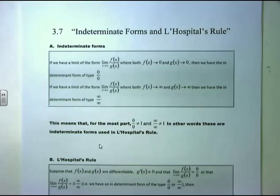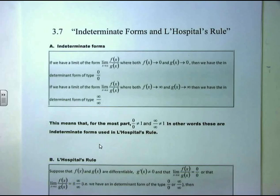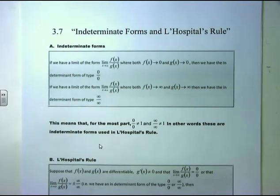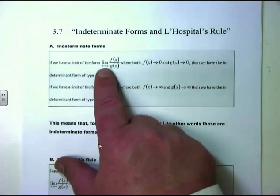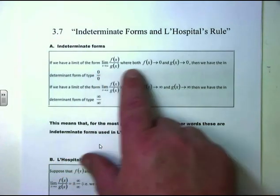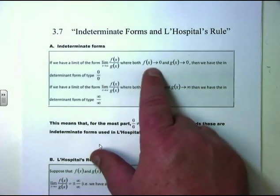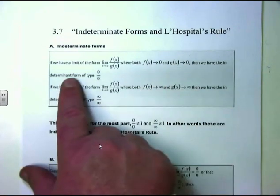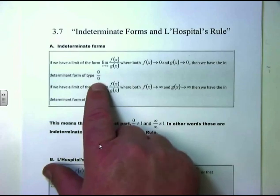Indeterminate forms are the classic 0 over 0 and infinity over infinity. If you remember when we started doing limits back in chapter 1, anytime we took a limit and got 0 over 0, we were supposed to do algebra. If f(x) approaches 0 and g(x) approaches 0, then we have an indeterminate form of type 0 divided by 0.